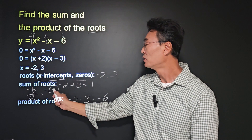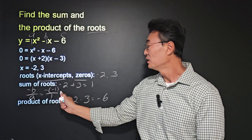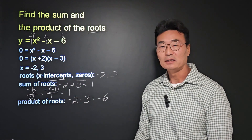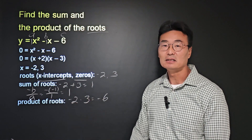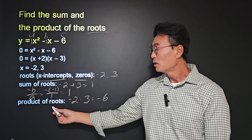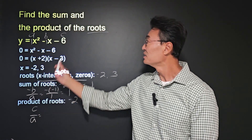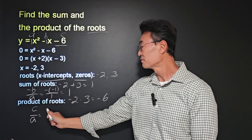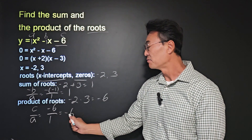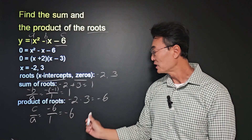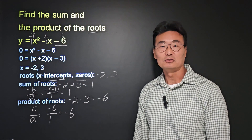So the sum is negative b, which is negative 1, over a, which is 1, giving us 1. This matches the sum we found by adding the actual roots. The formula for the product of the roots is c over a, so c is negative 6 over a which is 1, giving us negative 6 — matching the product we found by multiplying the roots.